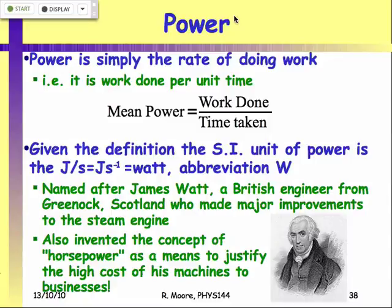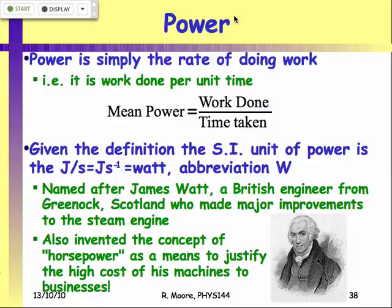We've got work done in joules, time taken in seconds, so we've got joules per second, and that gets a new name: the Watt, abbreviated capital W. When you write the name, you always write it with lowercase. It's named after a British engineer from Scotland who didn't so much invent the steam engine — what he did was put condenser valves around the piston to cause the steam to condense, which massively improved the efficiency of the steam engine.